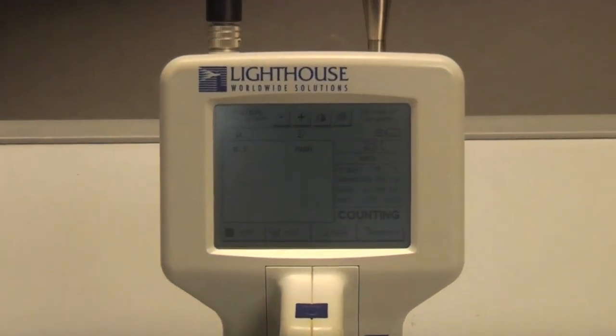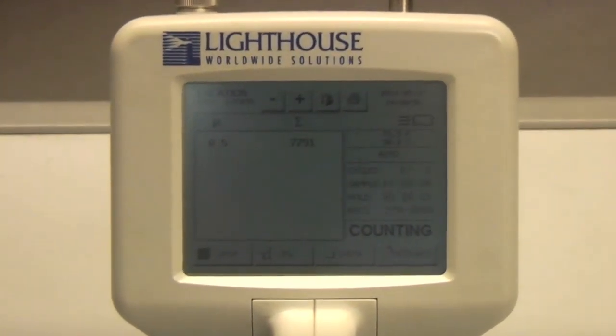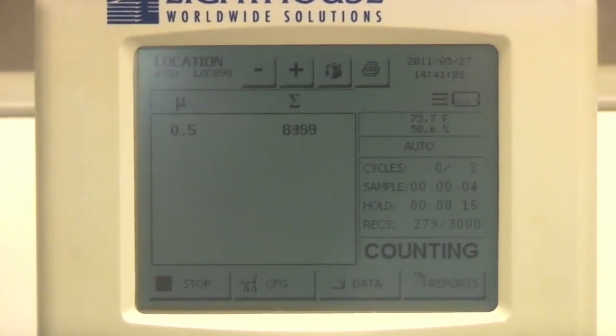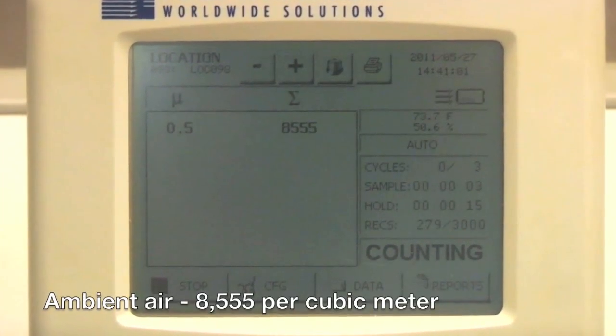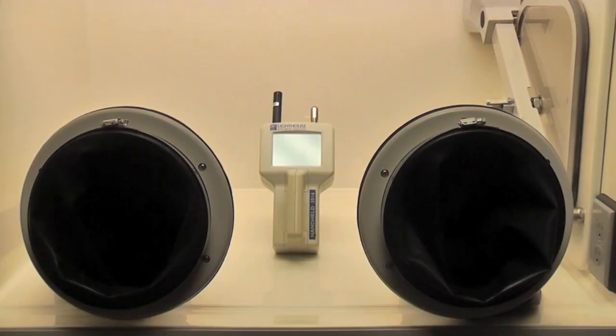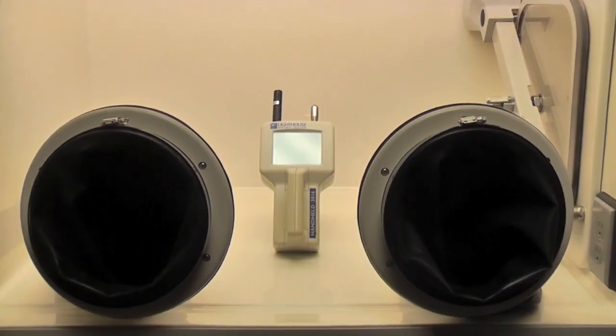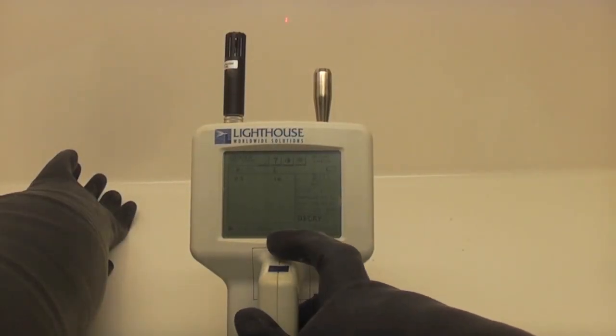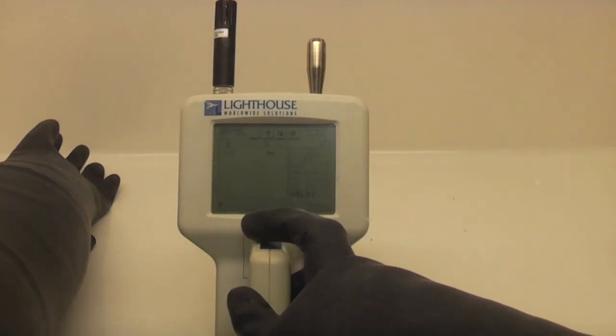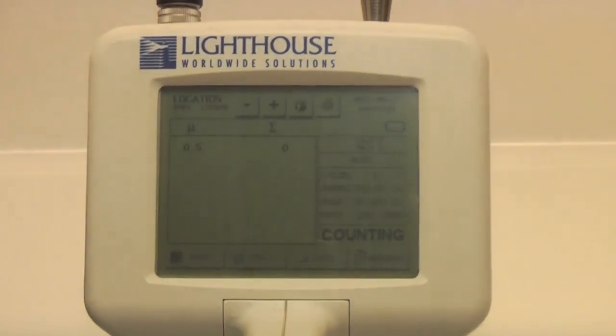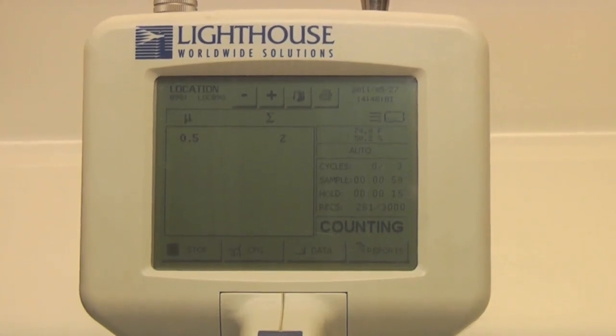For this video demonstration, we utilized a lighthouse particulate counter within the protector HEPA filtered glove box. Ambient air particulate counts at the 5 micron size are shown to be 8,555 per cubic meter. Within 5 minutes of maximum blower speed operation, 100 CFM, the 5 micron size particulates were reduced to below 15. This equates to a Class III ISO clean air classification.